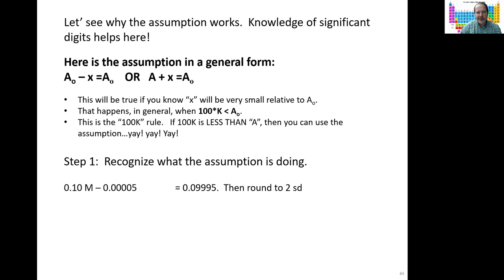And you can see that I get a number there. But I've got to round it to two significant digits, to two decimal places, because of the addition-subtraction rule. Well, it's 0.10. I'm right back to where I started.